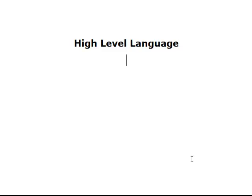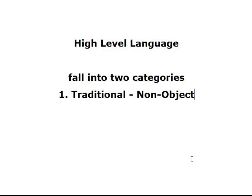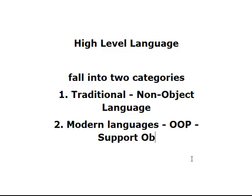High-level languages fall into two categories. The first one is traditional — what I mean by traditional language is a non-object language. The second is the newer, so I'm going to call them modern languages. The modern languages, I'm talking about object-oriented programming. The concept of objects is supported in these modern languages, and that's the languages that have taken over from the traditional languages.